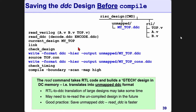Should something go wrong — an error, a power cut, needing to restart DC — you don't have to read in all those Verilog and DDC files all over again. You can straight away read in this one DDC file. The advantage is speed. Every time you read a Verilog file, DC performs translation, which can take anywhere from minutes to hours to days depending on the design size. When you re-read the DDC, DC skips translation because it's already done.